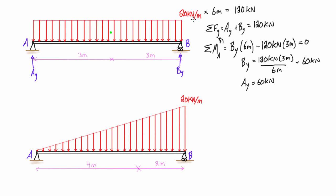There's a graphical interpretation here: when we did 20 times 6, we were really computing the area of the rectangular shape — base times height. For a triangle, this becomes important. To find the total load from a triangular distributed load, we take the area of the triangle, which is one-half times base times height: one-half times 6 meters times 20 kilonewtons per meter.